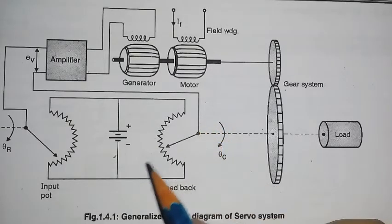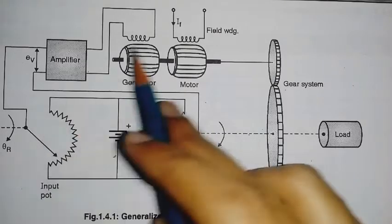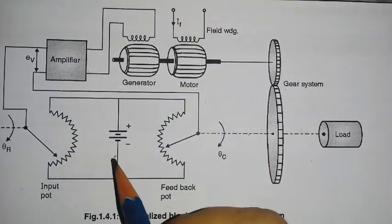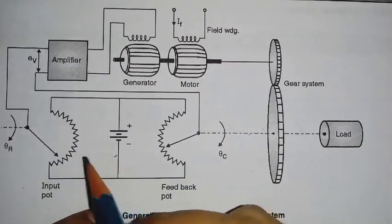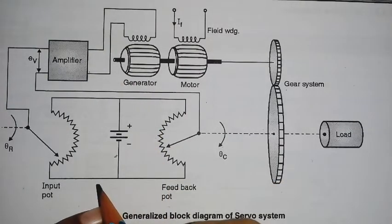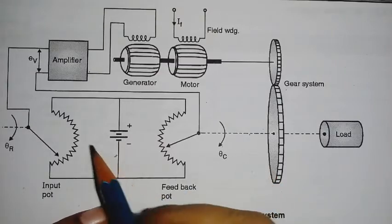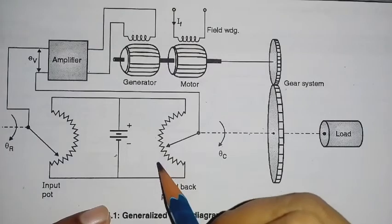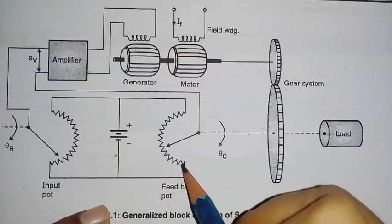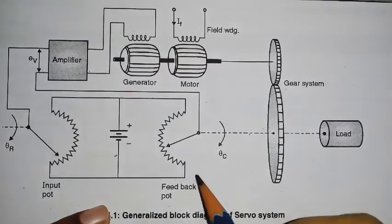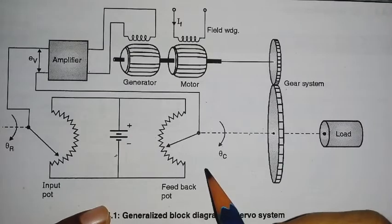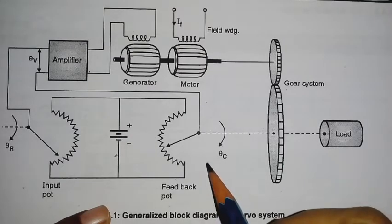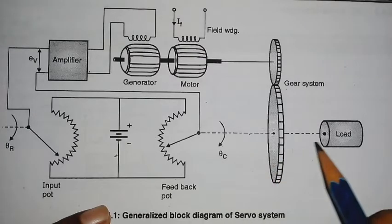Servo systems are nothing but closed loop systems, where feedback is used to maintain the output. Because of the feedback used, the output is maintained. The block diagram of a servo system is used to position some final elements like a load.